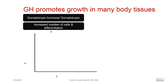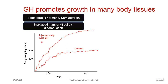This graph shows the effect of growth hormone. The y-axis shows body weight and the x-axis shows number of days. The experiment was done in two groups of animals: one group was injected daily with growth hormone, and the second group acted as a control with no growth hormone. On the 200th day, the weight of the control animal was 100 grams, while the animals that received growth hormone weighed almost 200 grams — nearly twice as much.